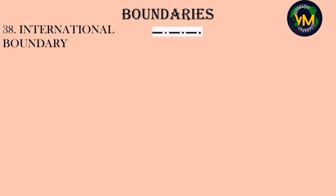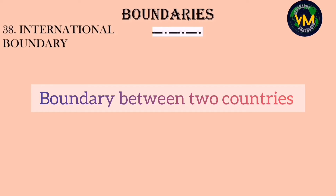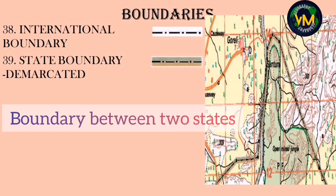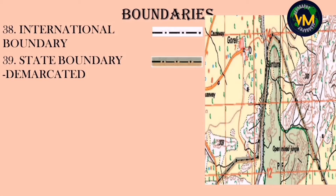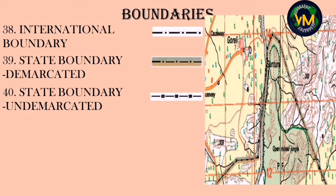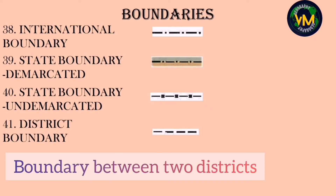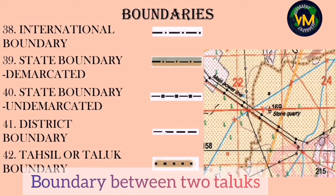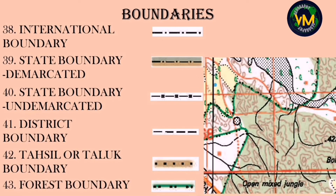Coming to boundaries: the international boundary is between two different countries, but we don't have this symbol in our topographical map. State boundary is between two different states and can be demarcated or undemarcated — in our maps, we see the demarcated state boundary with two different colours. Number forty-one is district boundary. Number forty-two is taluk or thasil boundary, dividing a district into several taluks. Finally, forest boundary is seen wherever there is a forest area, connected by green colour.